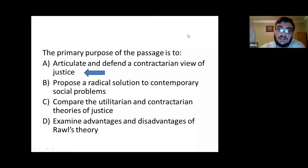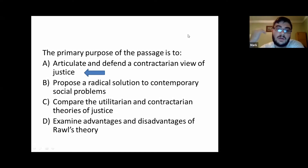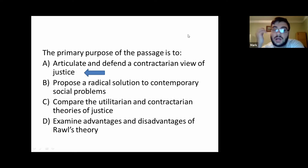A is 'articulate and defend a contractarian view of justice,' whereas C is 'compare the utilitarian and contractarian theories of justice.'